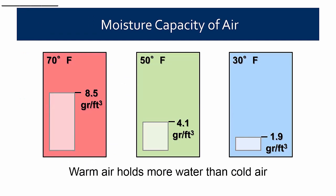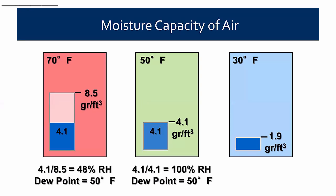This is a diagram showing moisture capacity. The one on the left is 70-degree air, 50-degree air in the center, and 30-degree air on the right. The capacity of 70-degree air to hold moisture is 8.5 grains per cubic foot — that's the amount of mass of water that air can hold. If we put in 4.1 grains of moisture, then the relative humidity is the ratio of the amount it can hold versus the amount in the air — so in this case, for 70-degree air, it's 4.1 divided by 8.5, which is 48%.